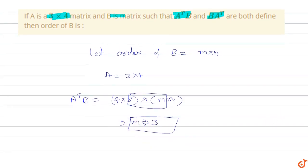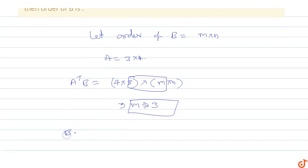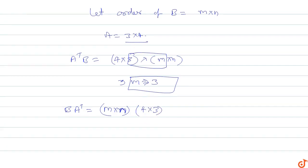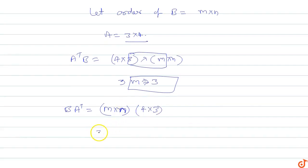Now we also know that B into A transpose is defined. B order is M cross N into A transpose. A transpose is 4 by 3, so if both multiply, then N equals 4. So M is 3 and N is 4.